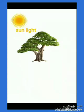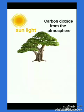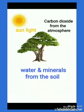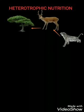The essential conditions for autotrophic nutrition are: green plants need sunlight, carbon dioxide gas from the atmosphere, and minerals and water from the soil. The green plants contain a green pigment called chlorophyll, which is capable of trapping sunlight energy and helps in photosynthesis.